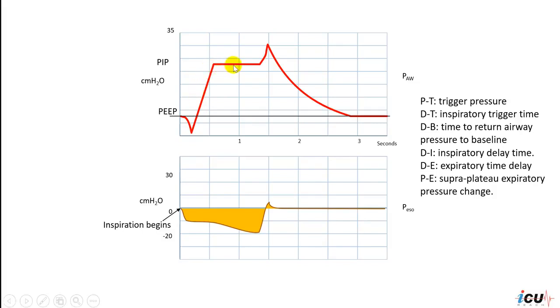This will be given for the duration of inspiration that is set by the operator before the machine cycles into expiration and the pressure goes back to the PEEP level.